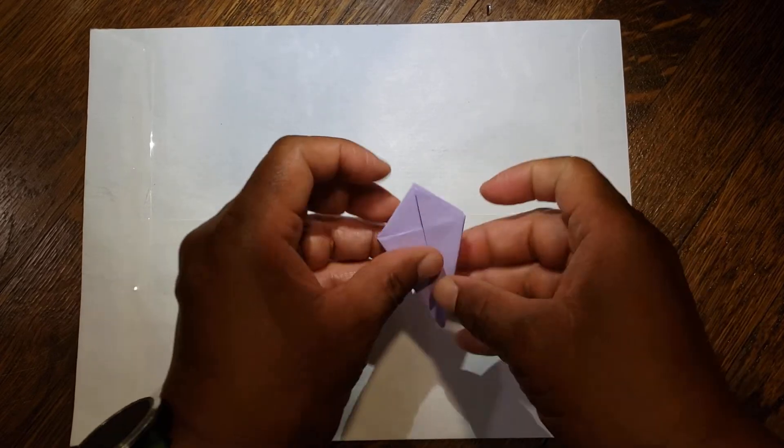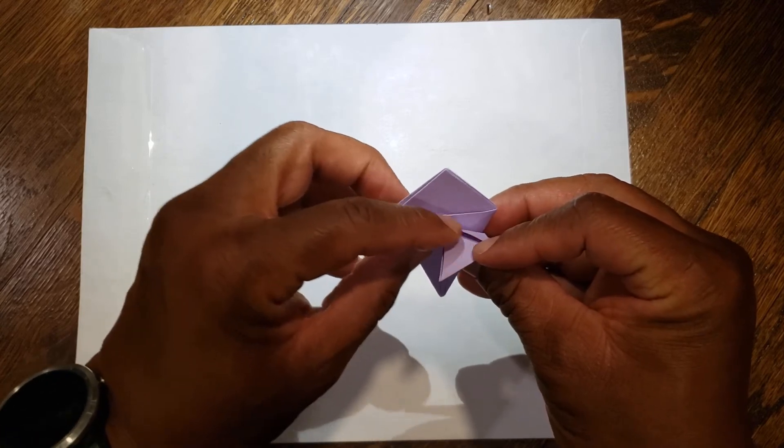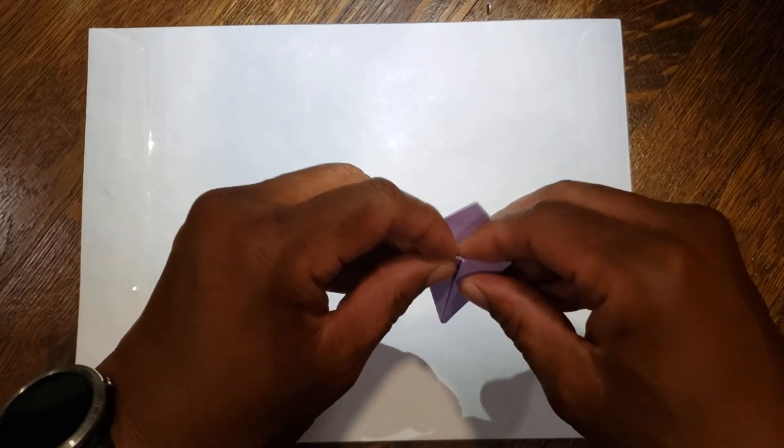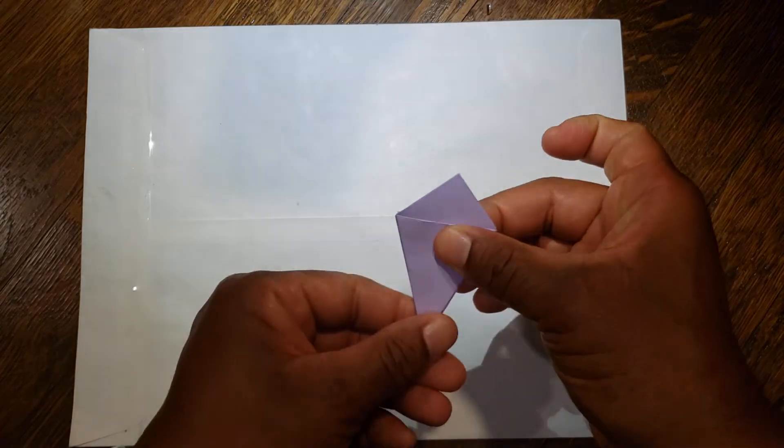Then pick up your whole paper and tuck it behind not just this front flap but both flaps. And again, we have a kite.